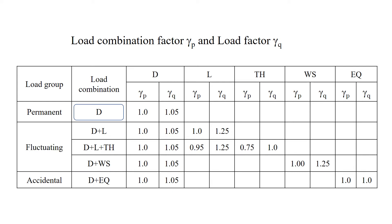For permanent load D, γp is 1.0 and γq is 1.05. As for D plus L, γq is 1.05 for D and 1.25 for L. This is because the live load is more uncertain than the dead load.